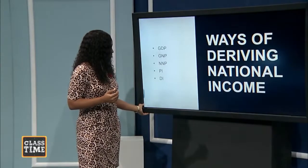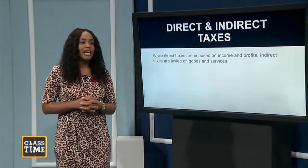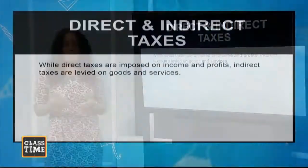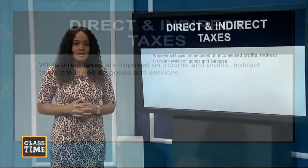As it relates to taxes, direct taxes are usually levied on incomes and profits, while indirect taxes are levied at the point where goods and services are being sold. With direct taxes, the individuals on whom the taxes are levied have the responsibility of paying them directly. With indirect taxes, those individuals are not paying directly to the government — another entity makes the payment on their behalf.